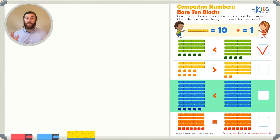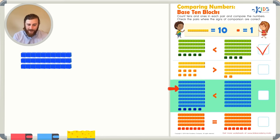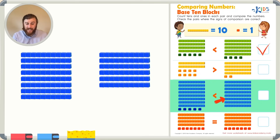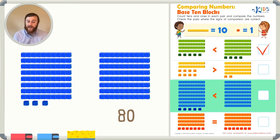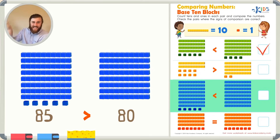Let's take a look at our next example. There are a lot of longs in this one. Let's see if we can figure out which number is larger by just counting the longs. The first number has 1, 2, 3, 4, 5, 6, 7, 8 longs. Now let's count the longs in the other number: 1, 2, 3, 4, 5, 6, 7, and 8. They both have 8 tens, which means they're both equal to 80. The number on the left also has 1, 2, 3, 4, 5 cubes, making it 85. But the comparison symbol shows that 80 is larger, and that's not correct. So we can't check this one as correct either.